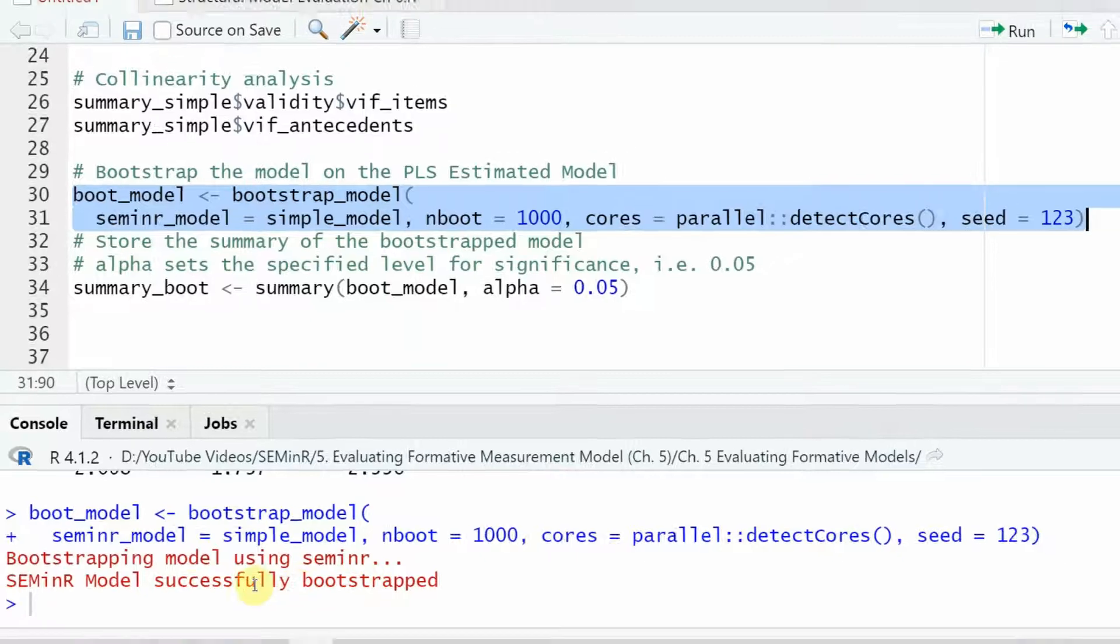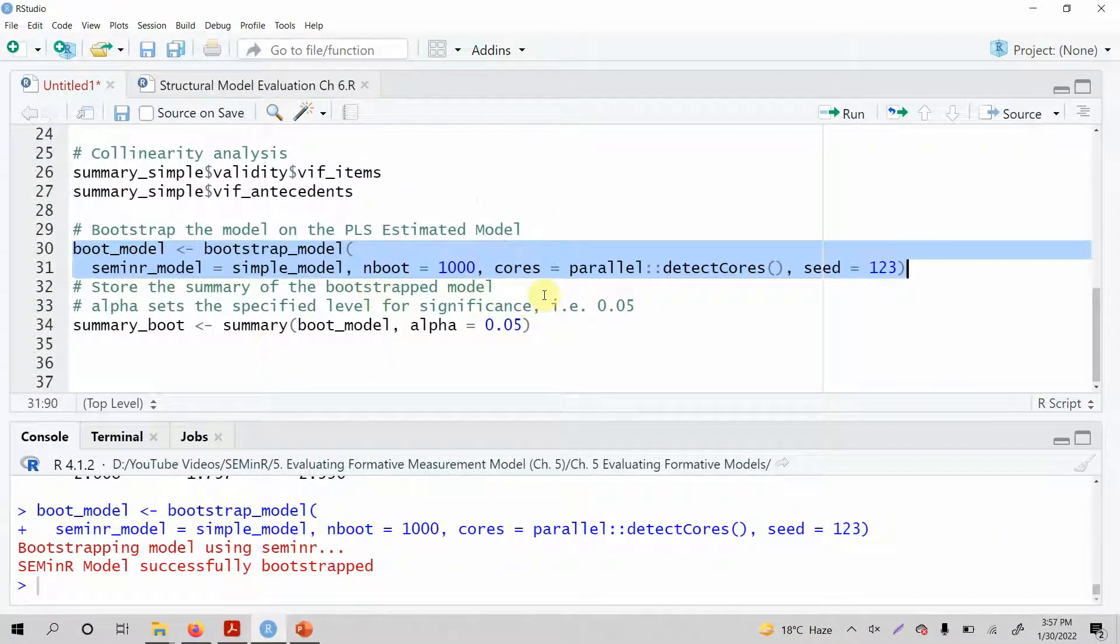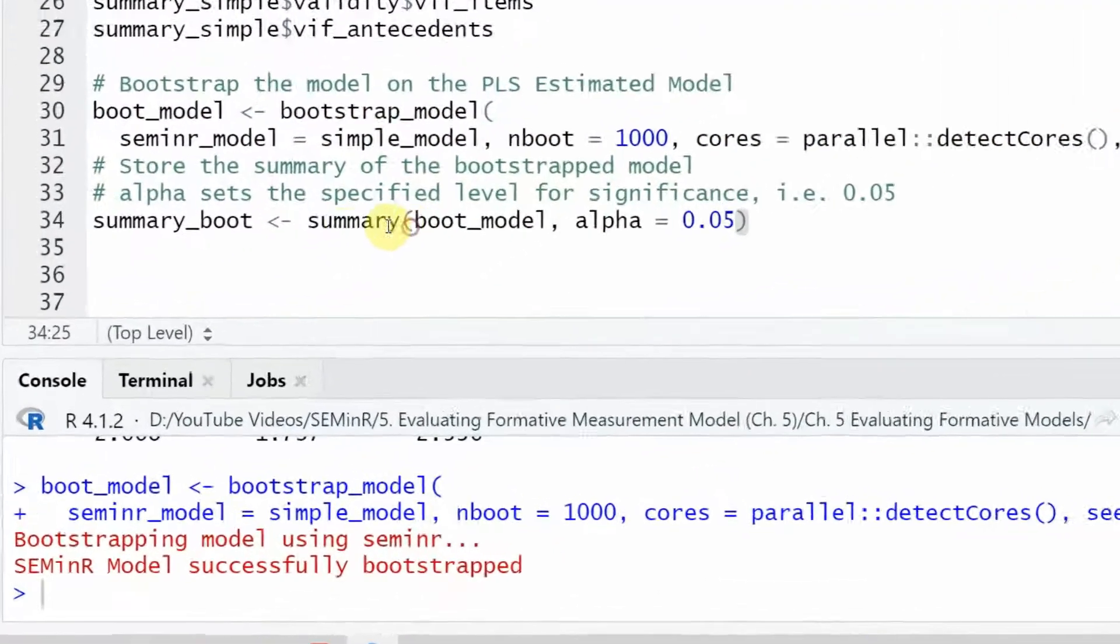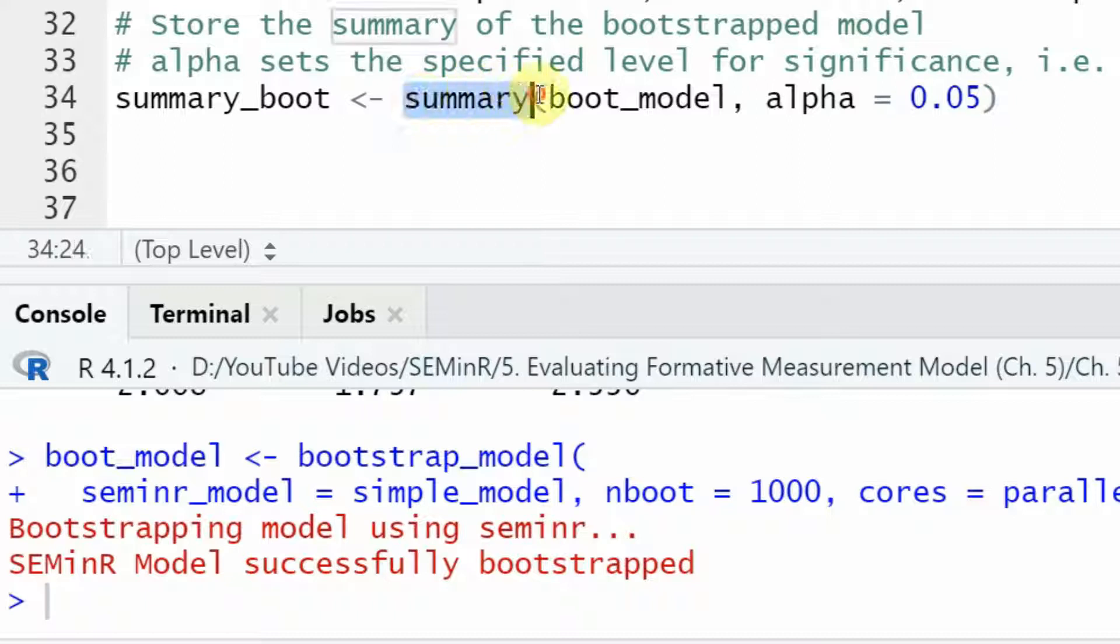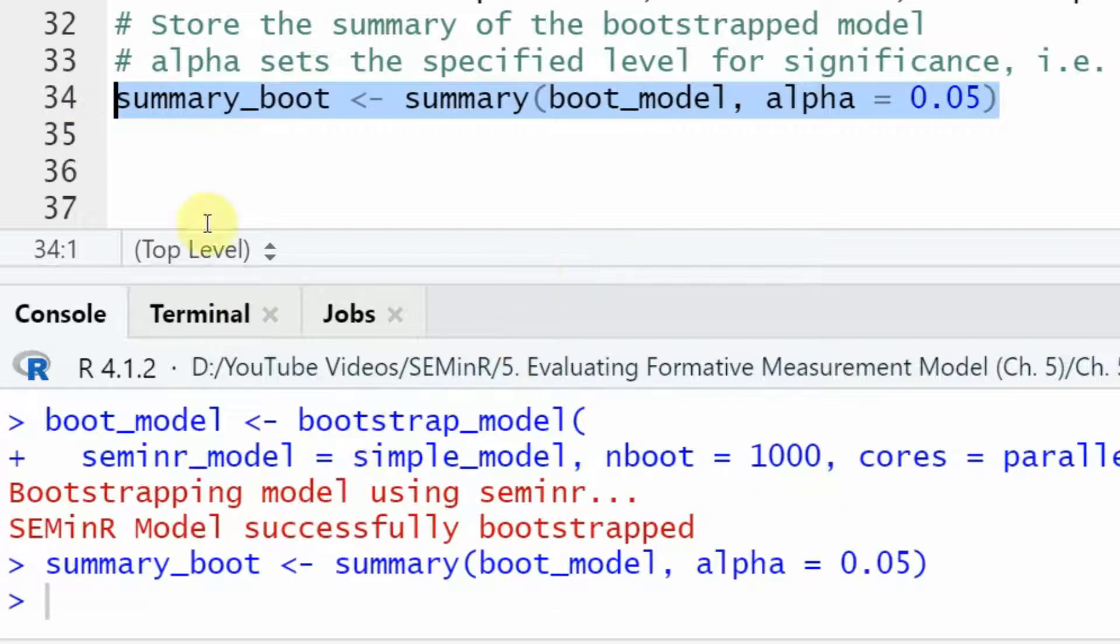Now SEM model successfully bootstrapped. Now that it is bootstrapped, I need the summary. How do I get the summary? I have to call the summary function, give it the bootstrapped model, mention the alpha value, and this will put all the summary in this object. Let's run it. Now it's there.